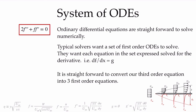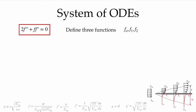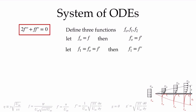We'll do this by defining three functions: f0, f1, and f2. We start by saying f0 is equal to f, our non-dimensional stream function. We express our system as derivatives, so f0 prime is equal to f prime. Then f1 is equal to the derivative of f0, which is f prime, and f1 prime is equal to f double prime, the second derivative of our non-dimensional stream function.